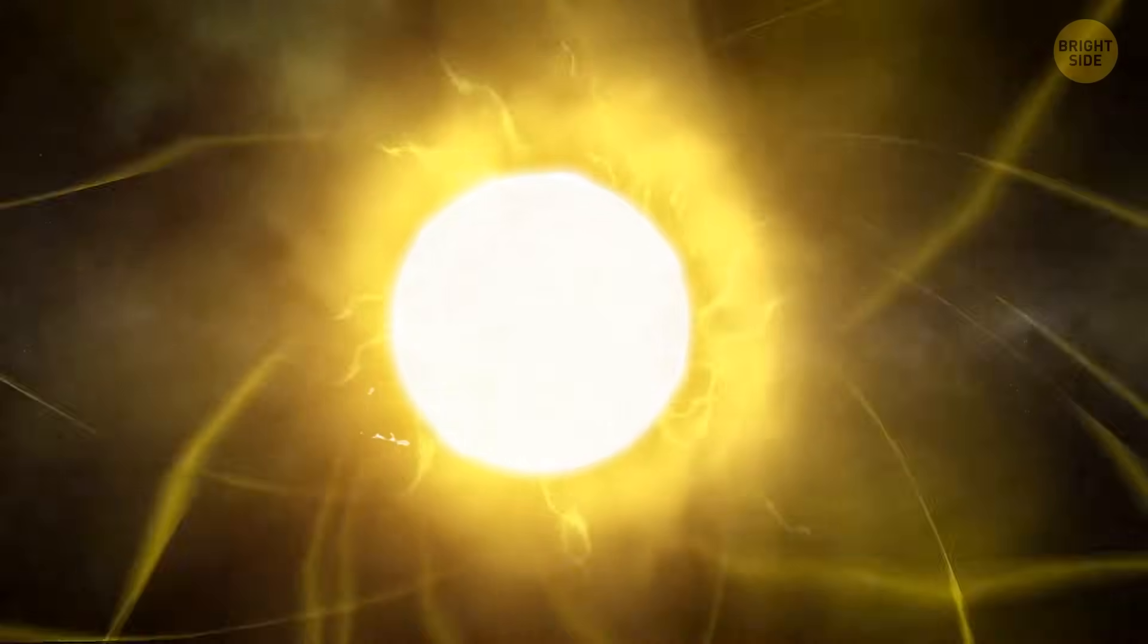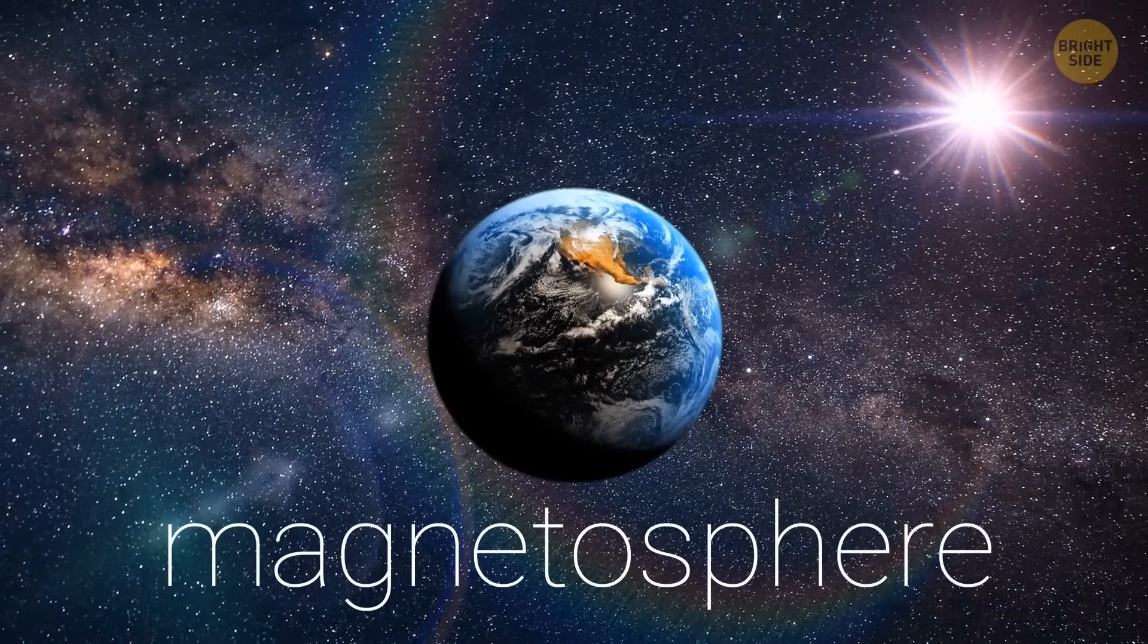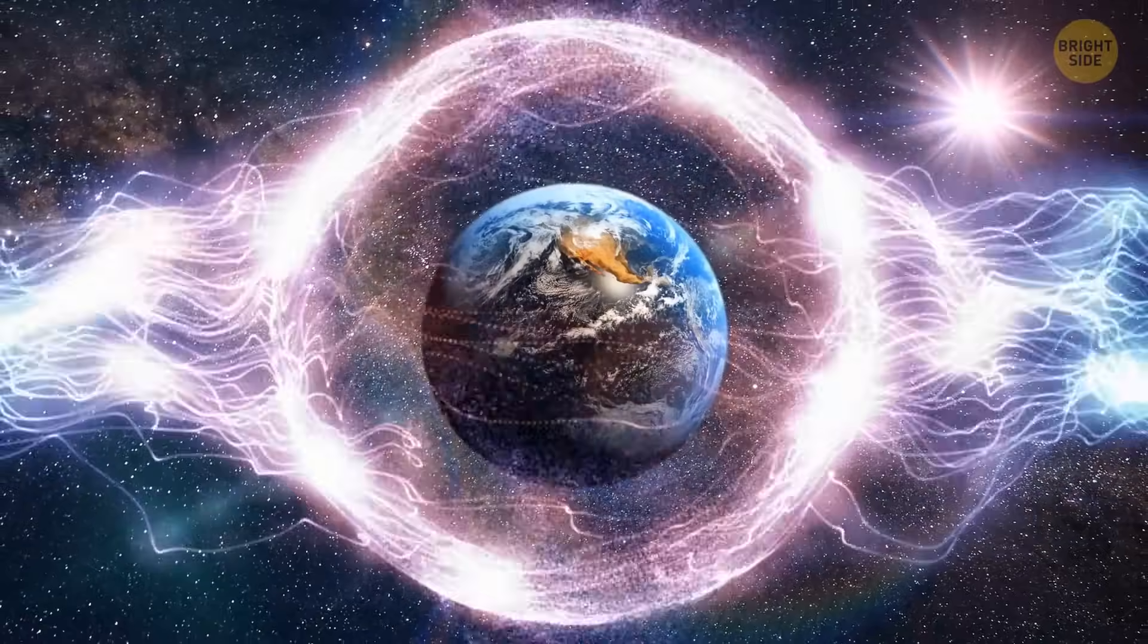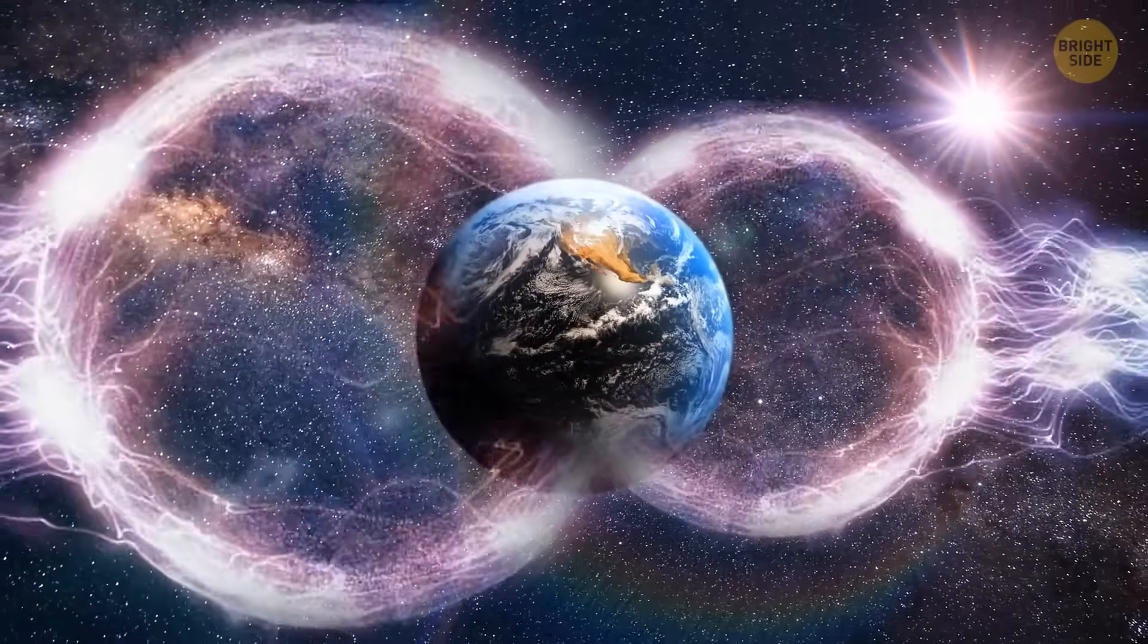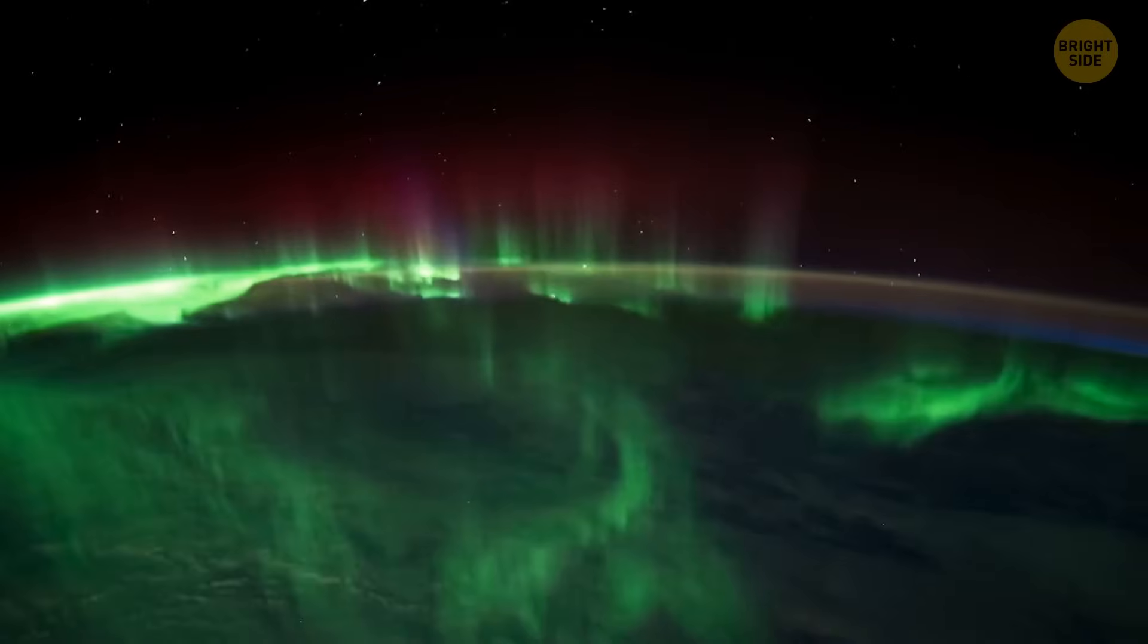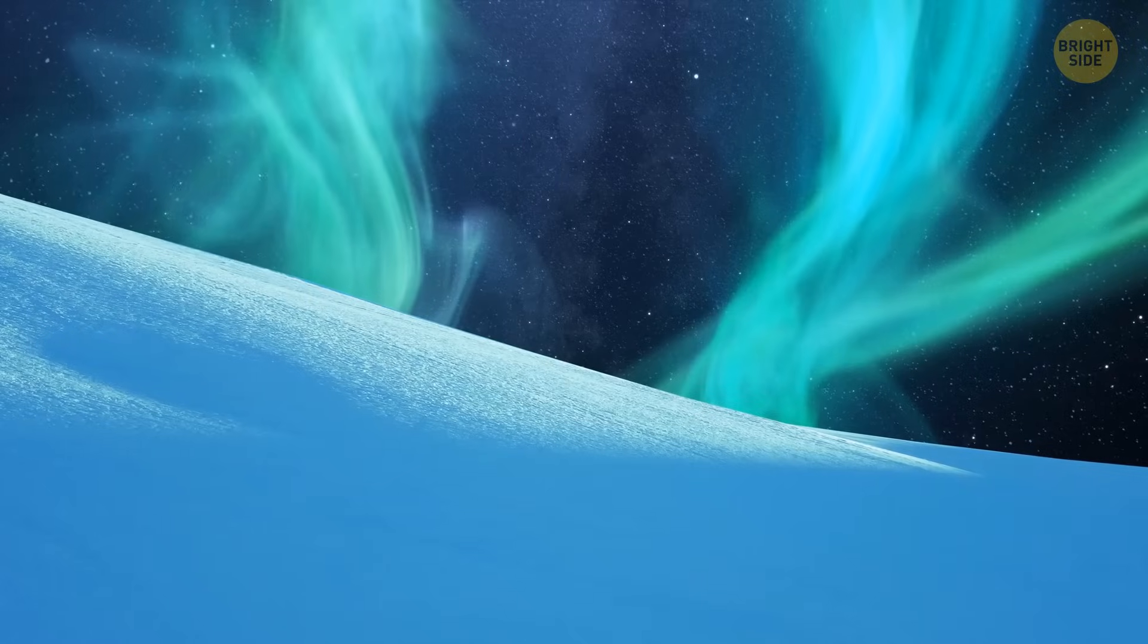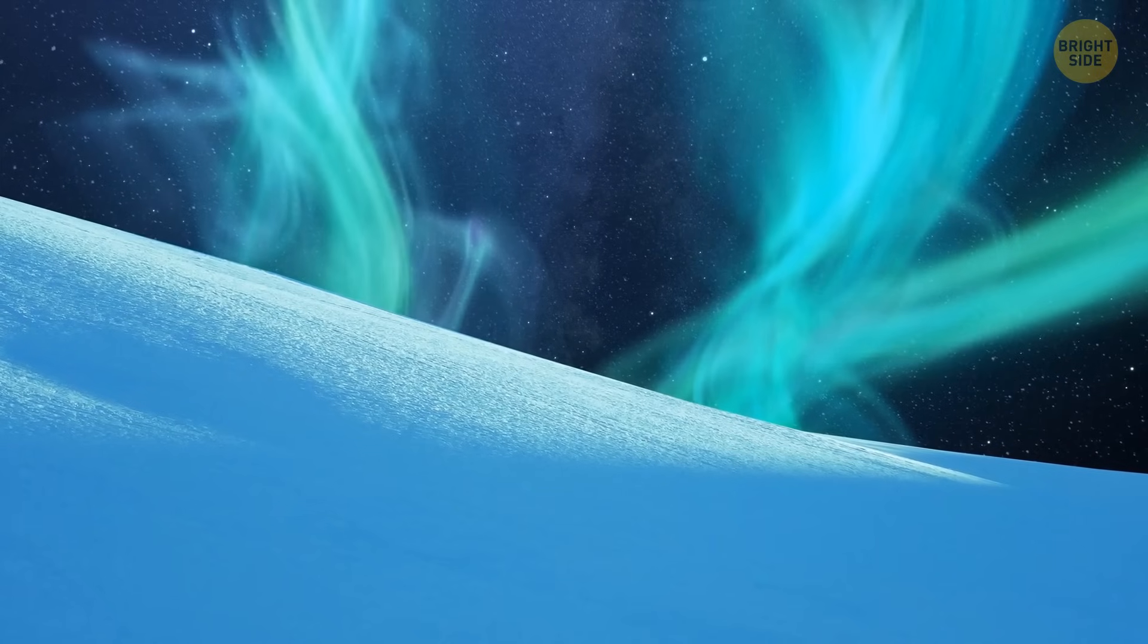We're mostly protected from them thanks to our Earth's magnetic bubble, the magnetosphere. This protective shield deflects many charged particles, including cosmic rays, away from our planet, or directs them toward the polar regions. And guess what they cause there? That's right, the famous, beautiful aurora borealis. The northern lights that we often see in the Arctic and Antarctic regions of the Earth are caused by travelers from outer space.